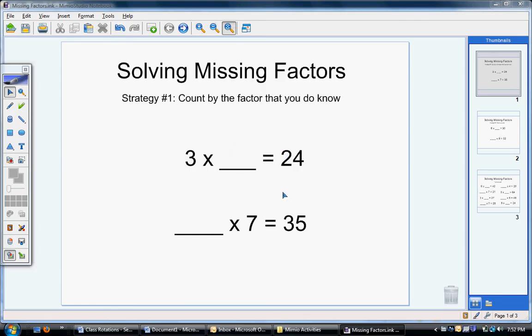Let's go ahead and see what it is if I'm trying to get up to twenty-four. Three, six, nine, twelve, fifteen, eighteen, twenty-one, twenty-four. I'm at my product where I want to go. I ended up with eight numbers that I had to count through. So my missing factor here is going to be eight. I know that three times eight is going to equal twenty-four.